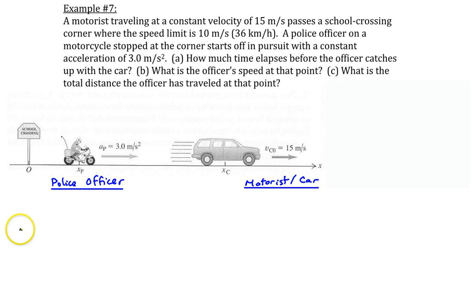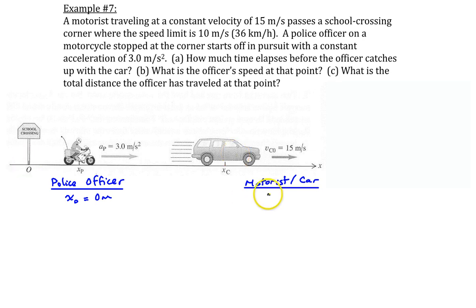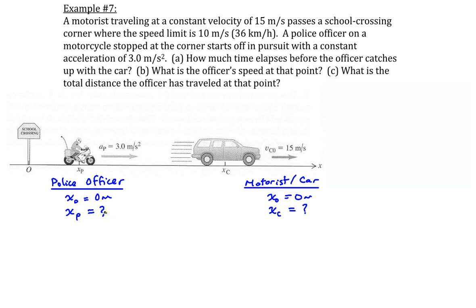We'll put the police officer's known and unknown information in one table and the motorist's information in another. Starting with initial position: at time t equals zero, the origin is placed where the motorcyclist was when the speeding car passed him. So the initial position of the police officer is zero, and the speeding car's initial position is also zero meters. Later, when the police officer catches up, we label the police officer's position as x sub p and the car's position as x sub c — both are question marks for now.